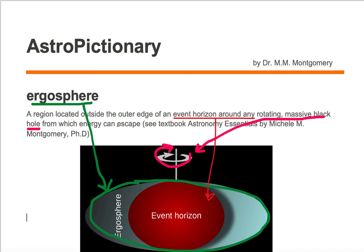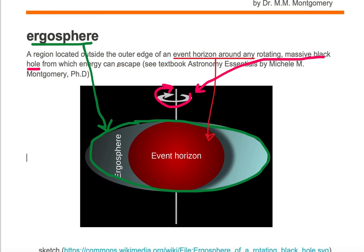An ergosphere is a region located outside the outer edge of an event horizon around any rotating massive black hole from which energy can escape. I'll draw some escaping energy here as purple photons leaving the ergosphere. The photons can leave the ergosphere but not from within the event horizon.